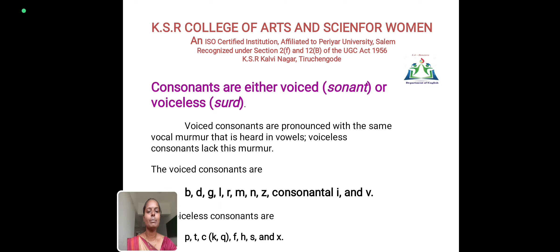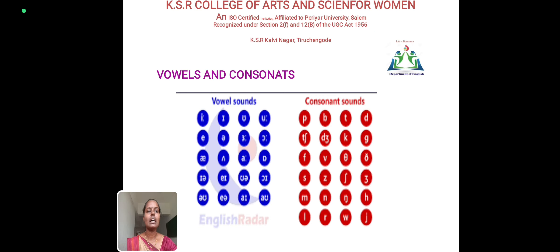Voiceless consonants are P, T, C, Q, F, and S. These sounds are voiceless consonants. There is also a picture showing vowels and consonants, where we can see the sounds in alphabetic order. Thank you.